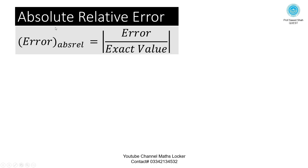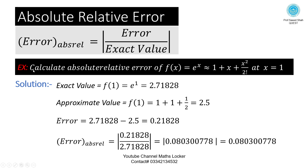Absolute relative error is the absolute value of error divided by exact value. Exercise: calculating exact value, approximate value, and error, then using the formula placing error and exact value, we get the answer |0.08000778|. The absolute value is always positive.